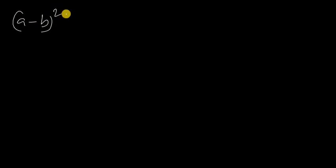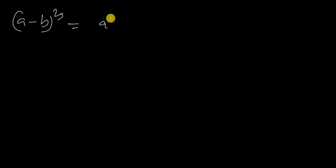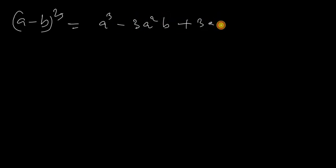Question number 2 is the A minus B whole cube formula. A minus B whole cube is a formula which will be covered in the next video. The formula is A cubed minus 3 A squared B plus 3 A B squared minus B cubed.